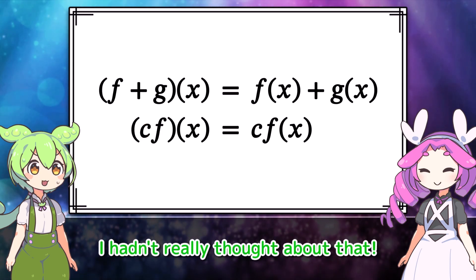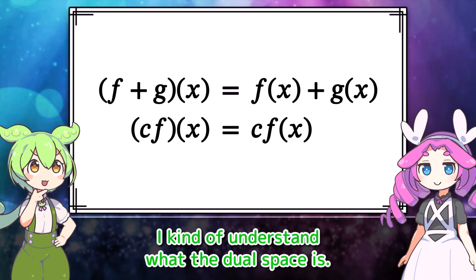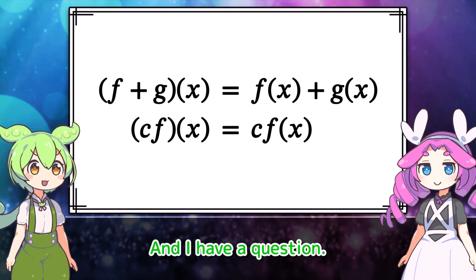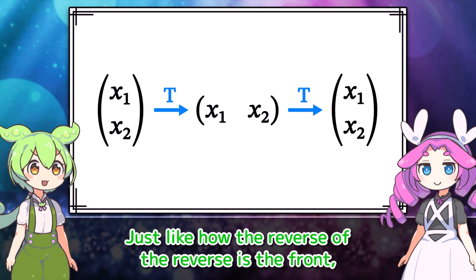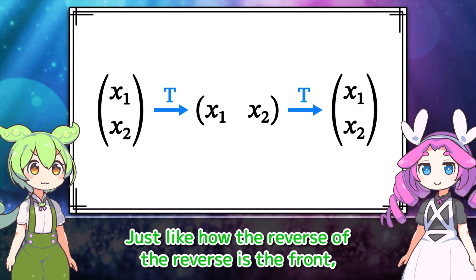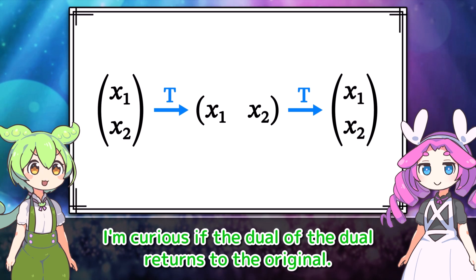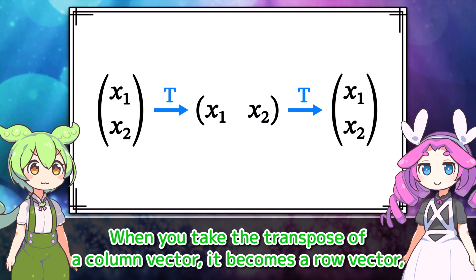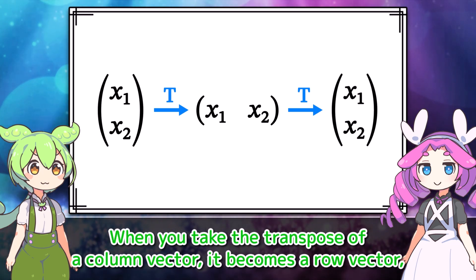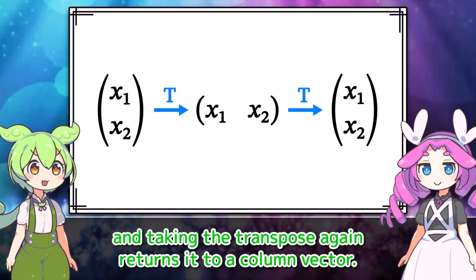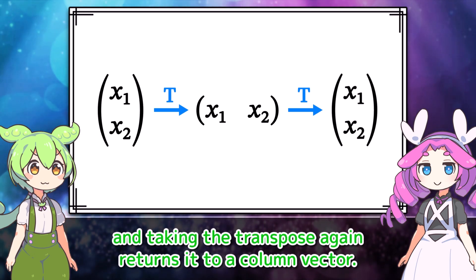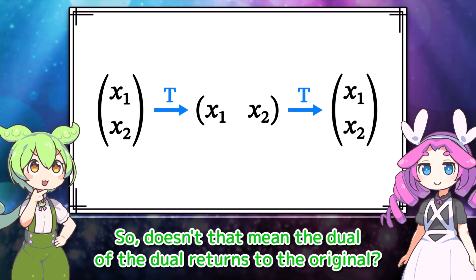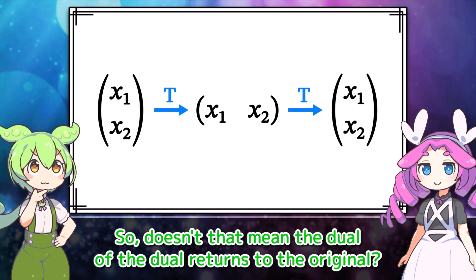I kind of understand what the dual space is. I have a question: just like how the reverse of the reverse is the front, I'm curious if the dual of the dual returns to the original. When you take the transpose of a column vector, it becomes a row vector. And taking the transpose again returns it to a column vector. So doesn't that mean the dual of the dual returns to the original?